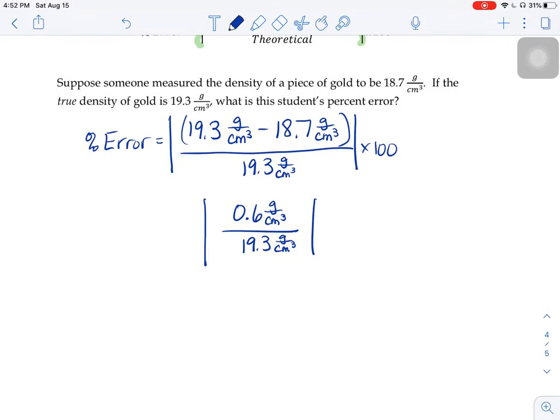Well, that grams per cubic centimeter on the top would cancel out with grams per cubic centimeter on the bottom. And then in our calculator, all we have to do is type in 0.6 divided by 19.3 times 100, and you will get roughly 3%. So, we would say that that student's percent error is 3%. That's pretty good. That means they were only off by about 3%. You want your percent error to be low.